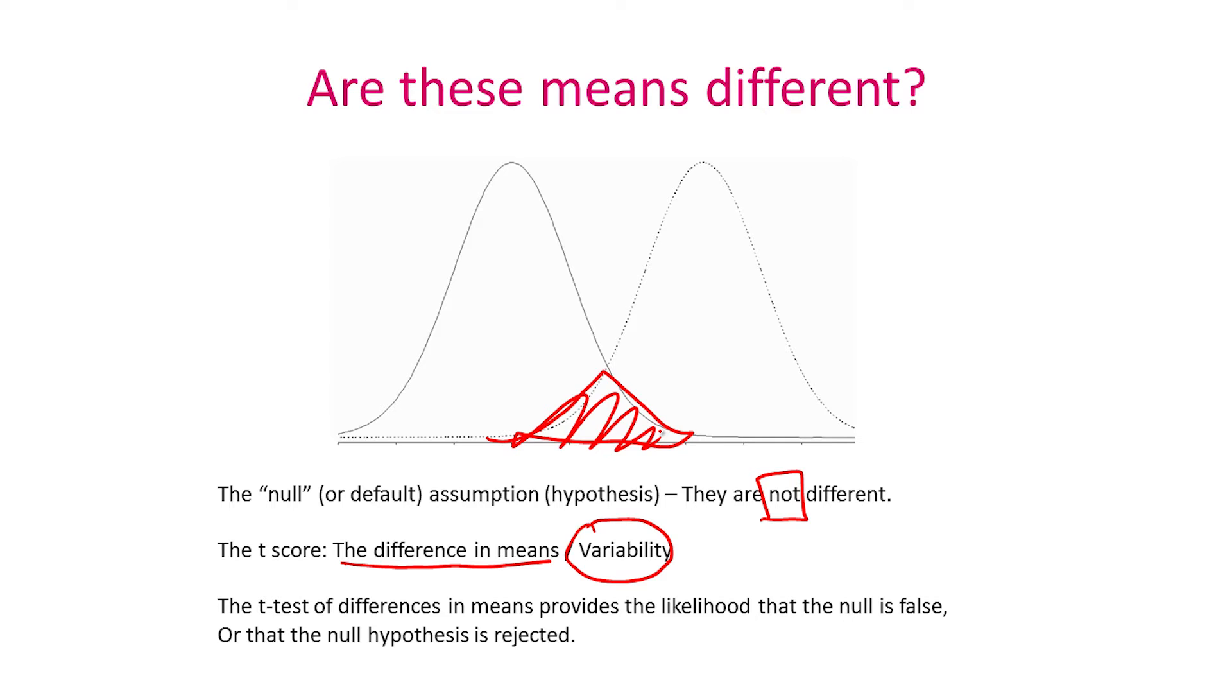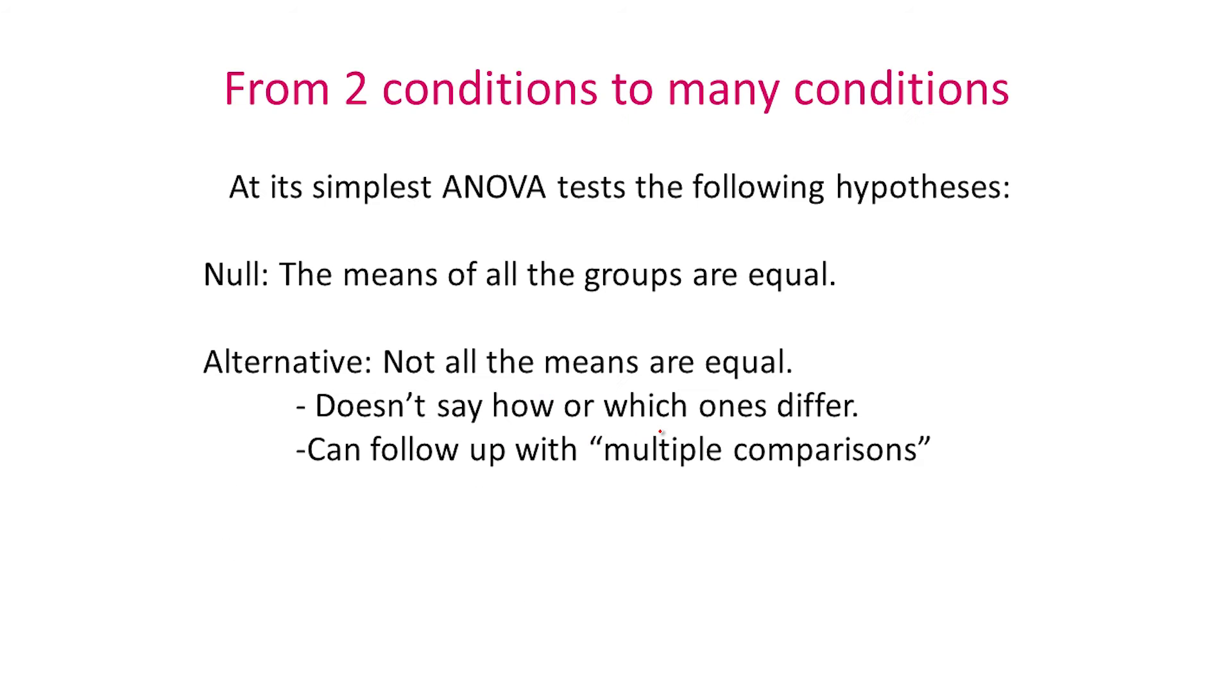Now, this analysis works really well when you have two groups, but what happens when there are multiple conditions or multiple groups? In that case, we use a technique called ANOVA. And just like a simple t-test, the null that we are going to use here is that the means of all of the groups are equal. The alternative is that the null is not true, that not all of the means are equal.